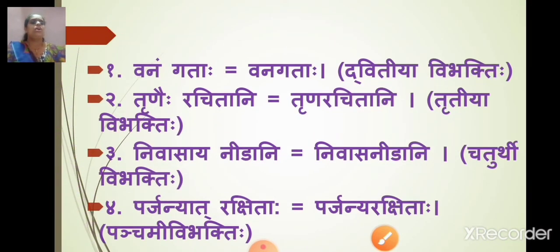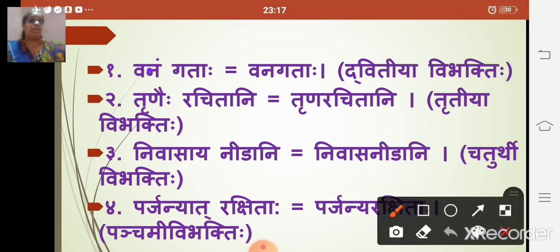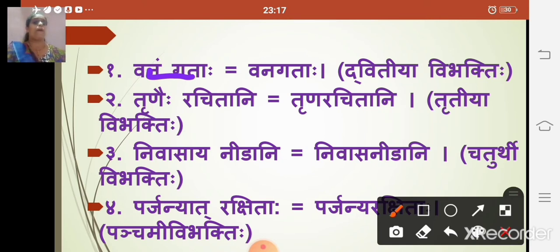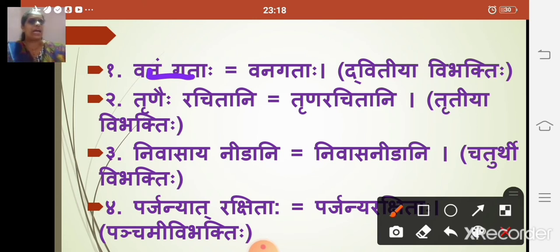In samasa formation, the samasic word is like 'vanamgatha.' Earlier examples like itara dvandva samasa — for example, 'balaka balika' — the vigraha is 'balakah cha balikah cha,' and the samasic pada is 'balaka-balika.' Similarly, vanamgatha is the vigraha form; the samasa pada is formed by combining both components.